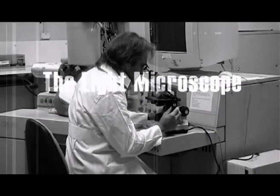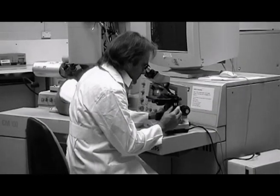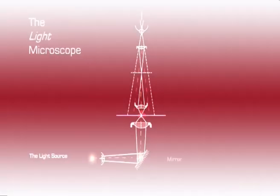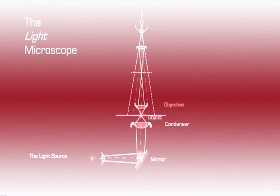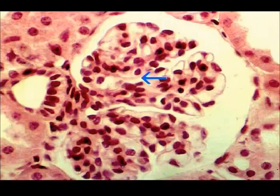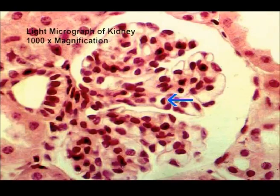The light microscope uses light as its source of radiation. Through a series of glass lenses, the light produces a magnified image of a specimen. This is a photograph of the kidney taken at 1,000 times magnification using a light microscope. This is the maximum useful magnification achievable with the system. Cells of different shapes and sizes can be seen, but little cellular detail is visible.